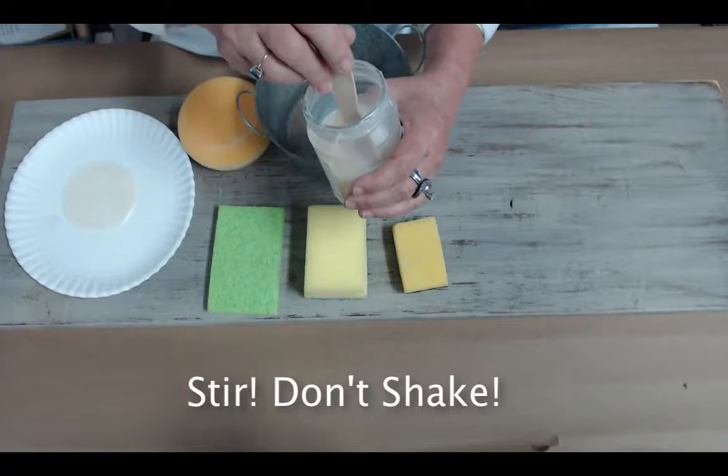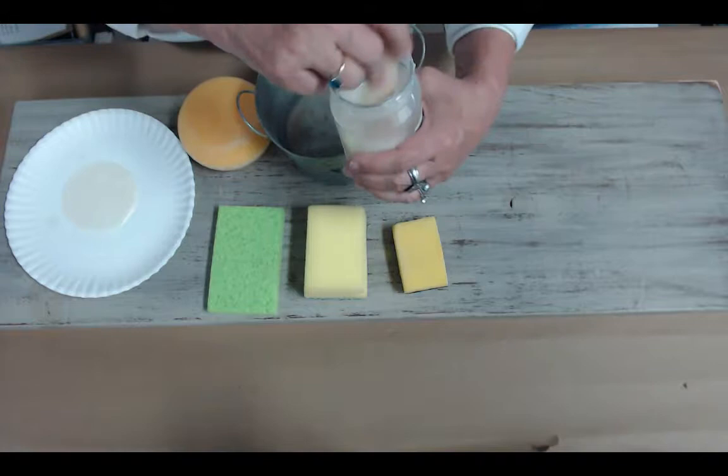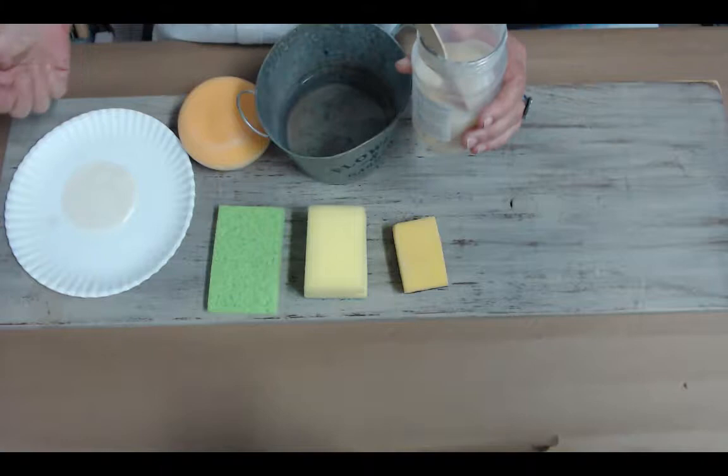I'm going to show you several different ways that we recommend applying these different top coats. One thing that's very important is you always want to make sure that you stir all of your top coats before you use them to disperse all the flattening agents.